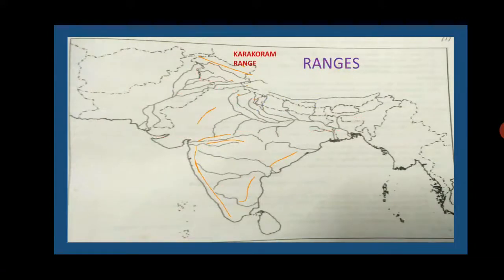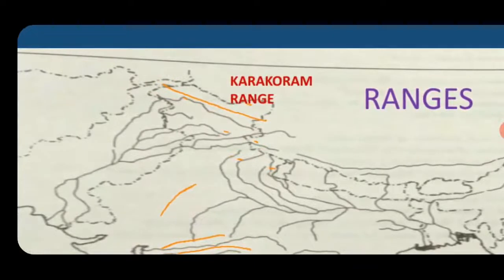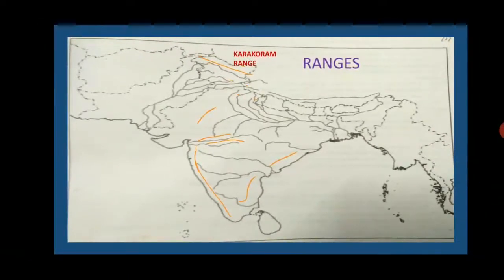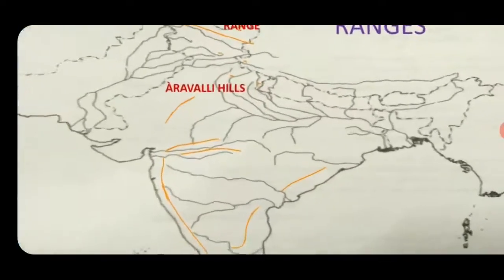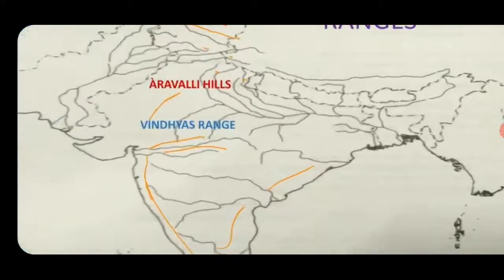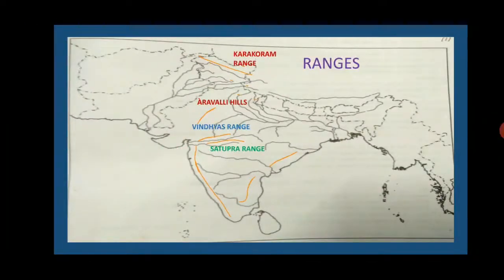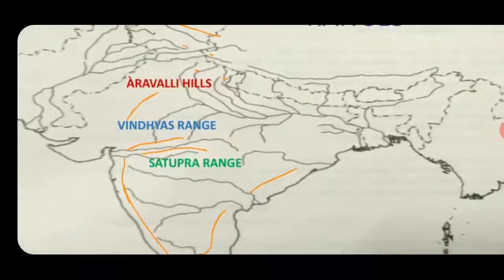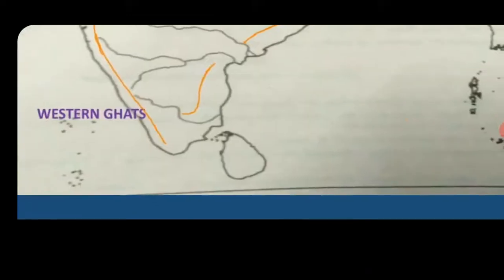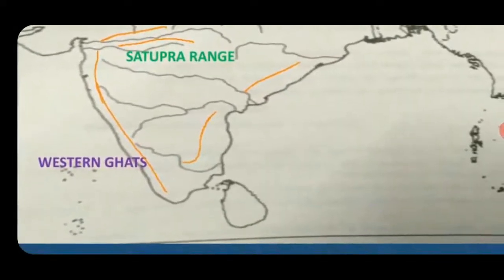Next are ranges. From the north you can see the Karakoram range, which is parallel to the Indus River. Next is the Aravalli range, which is in Rajasthan. Next is the Vindhya range — it is just above the Narmada River. Then the Satpura range, which is in between the Narmada and Tapti rivers.